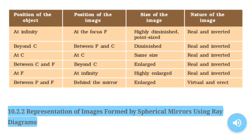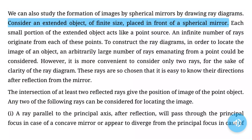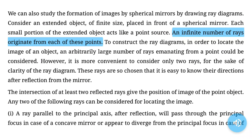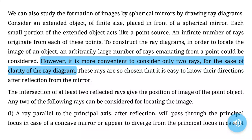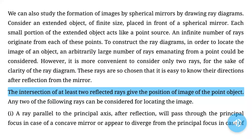10.2.2 Representation of images formed by spherical mirrors using ray diagrams. We can also study the formation of images by spherical mirrors by drawing ray diagrams. Consider an extended object of finite size placed in front of a spherical mirror. Each small portion of the extended object acts like a point source. To construct ray diagrams in order to locate the image, it is more convenient to consider only two rays. The intersection of at least two reflected rays gives the position of the image of the point object.